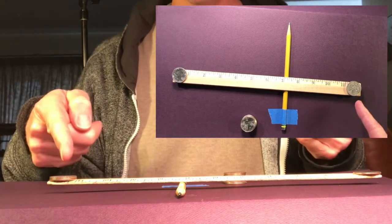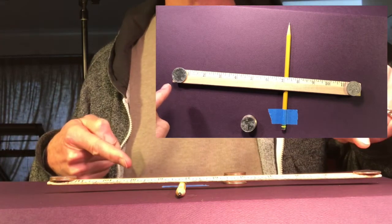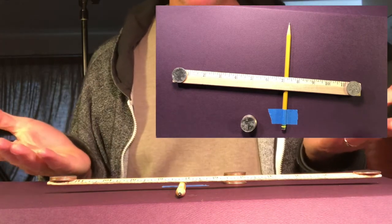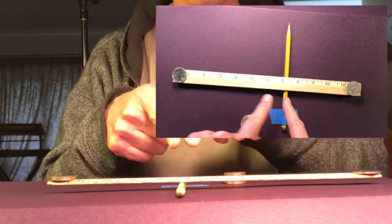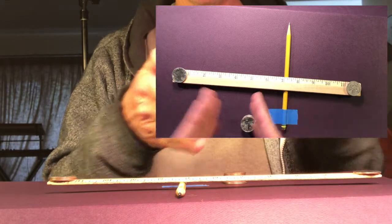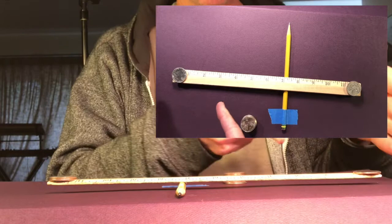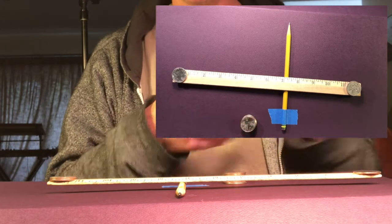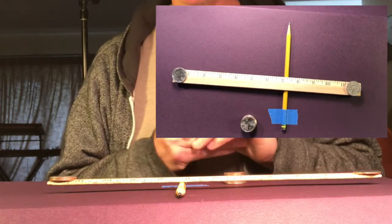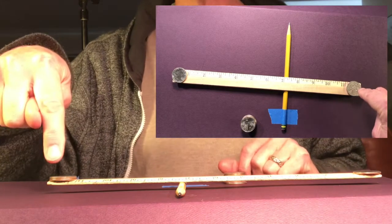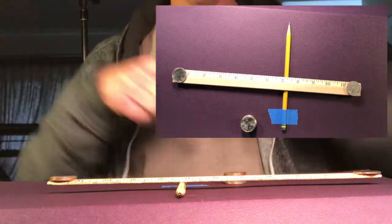Isn't that interesting that there's two quarters on this side and one quarter on this side? Well, what changed? What changed is now we have more of the weight of the lever, of the ruler over here. So that's adding to the weight. There's also twice as much force pushing down on this side as there is pushing down on this side.